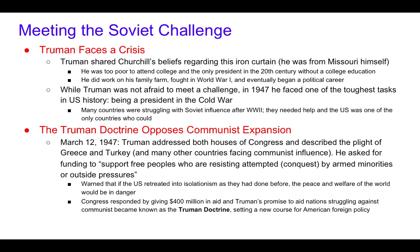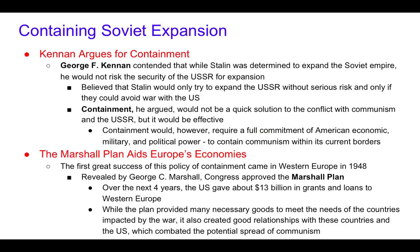The Truman Doctrine essentially stated that any country trying to avoid becoming communist could receive U.S. financial help. George Kennan contended that while Stalin was determined to expand the Soviet Empire, he would not risk the security of the Soviet Union to do it. Stalin would only try to expand if he could avoid a war with the United States. So containment, Kennan argued, would not be a quick solution to the conflict with communism, but it would be effective.